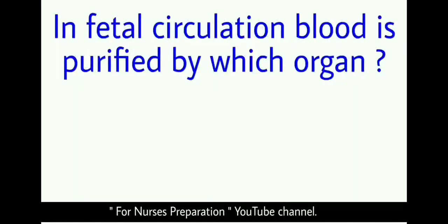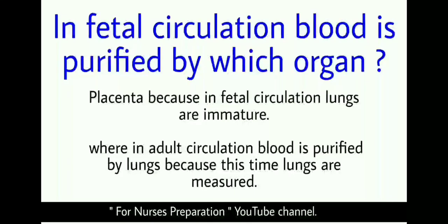In fetal circulation, blood is purified by which organ? In fetal circulation, blood is purified by the placenta, because the lungs are immature. Whereas in adult circulation, blood is purified by the lungs because at that time the lungs are matured.